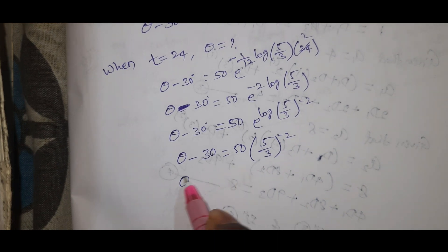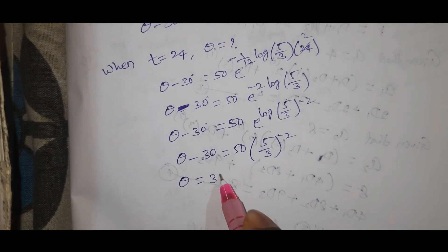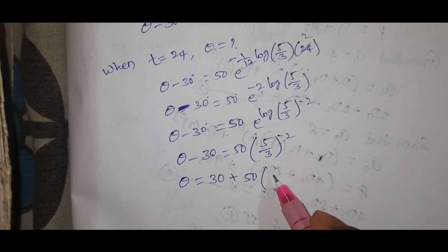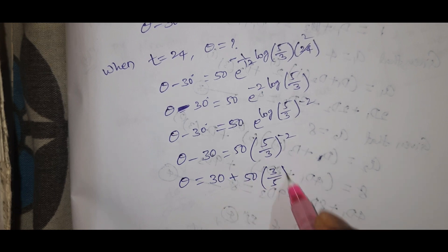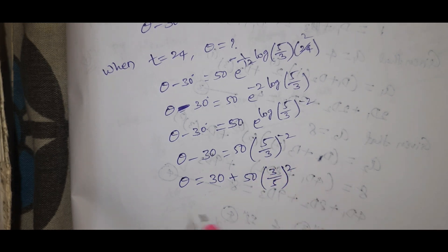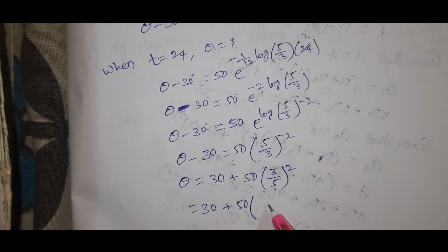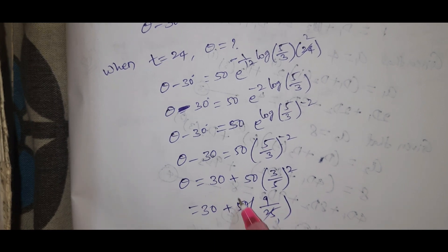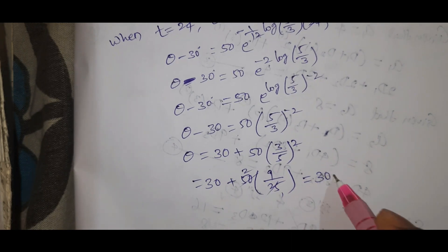So theta equal to 30 plus 50 into 3 by 5 whole square. That equals 30 plus 50 into 9 by 25, which gives theta equal to 30 plus 18, so theta equal to 48 degrees centigrade.